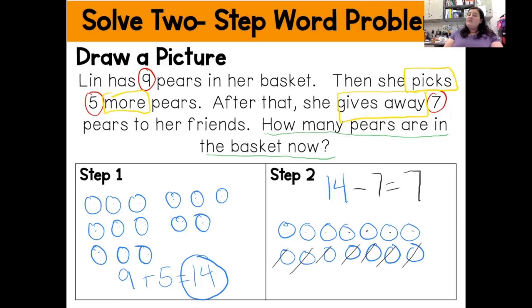So for step one, she had 14 pears, but then she gave away seven more and now she only has seven pears left.